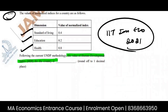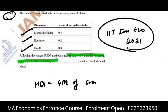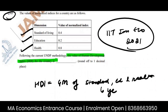HDI is calculated using the geometric mean of standard of living, education, and health. Standard of living can actually be replaced by income — that's the actual measure we use, which is nothing but the income level.